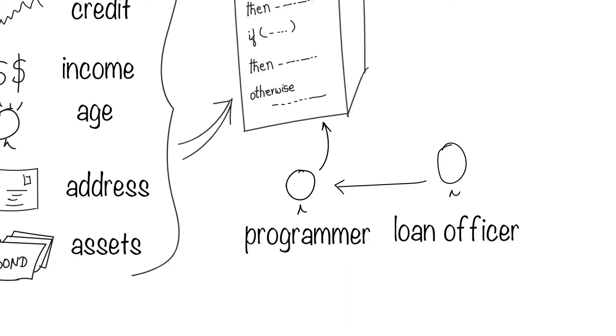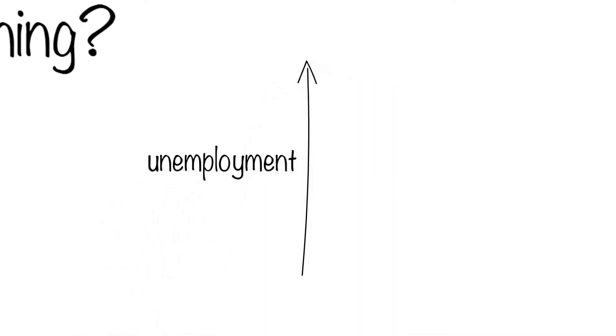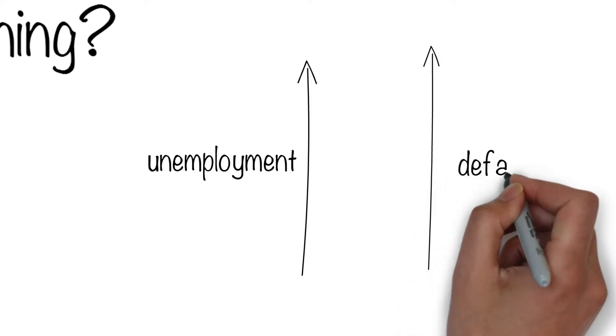The problem was that these rules had to be maintained in the computer. Say the unemployment rate increased. Then the chances of default would be higher.